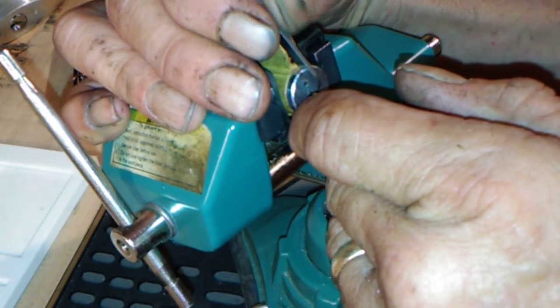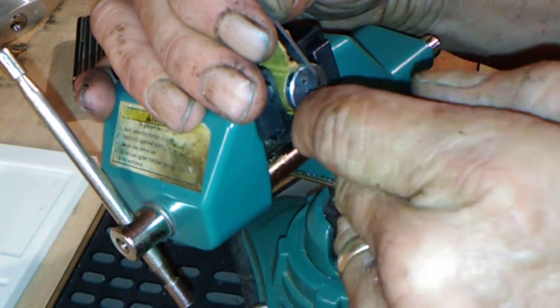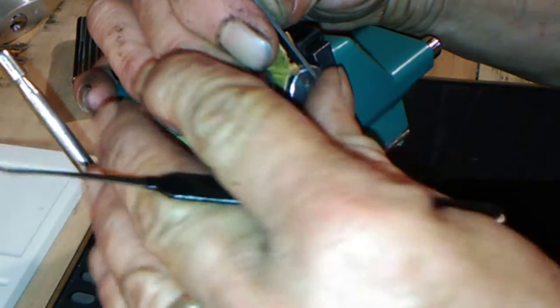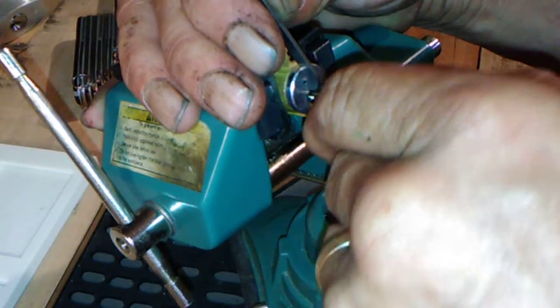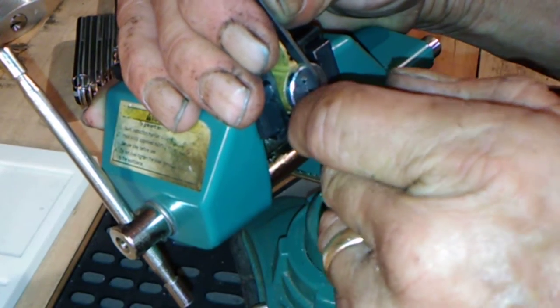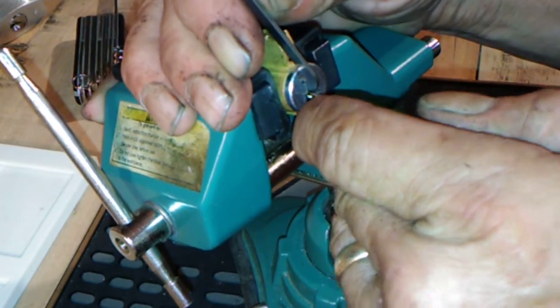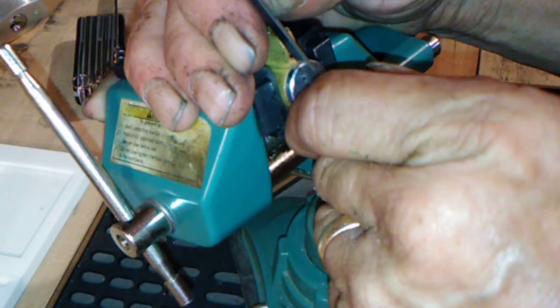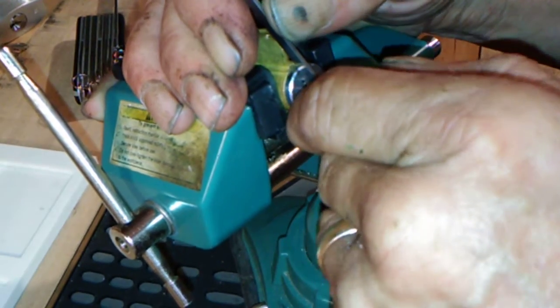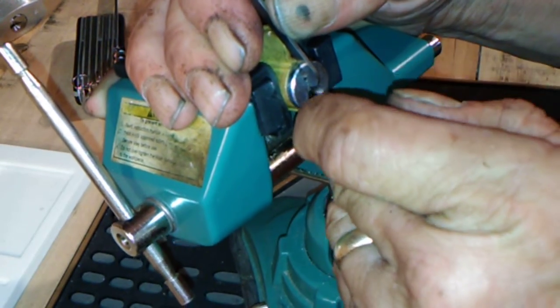I don't know what I've been doing different lately, holding the tension wrench weird or something somehow because it's always trying to pop out on me. I can't figure out what I'm doing wrong. I know it's just me but...